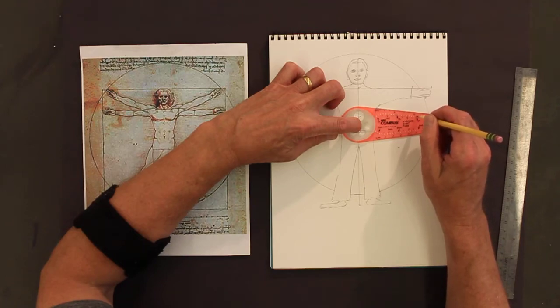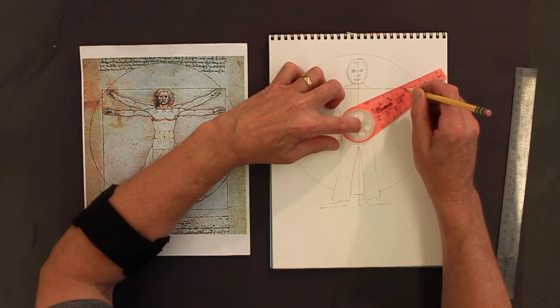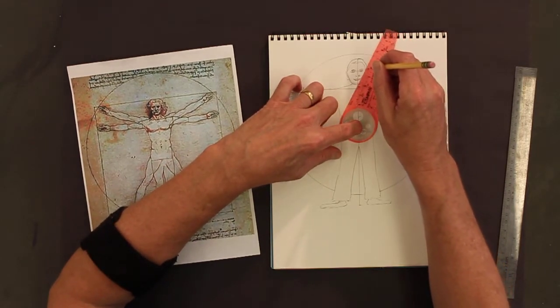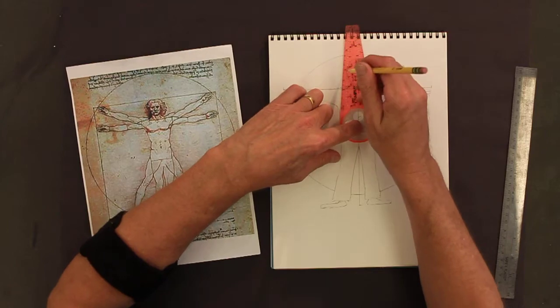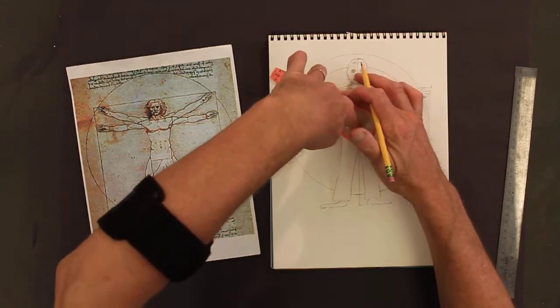Now some students might like to make double circles. I'm going to make a double circle and go this way. I'm going to stop and keep going, stop again, and go around my head.